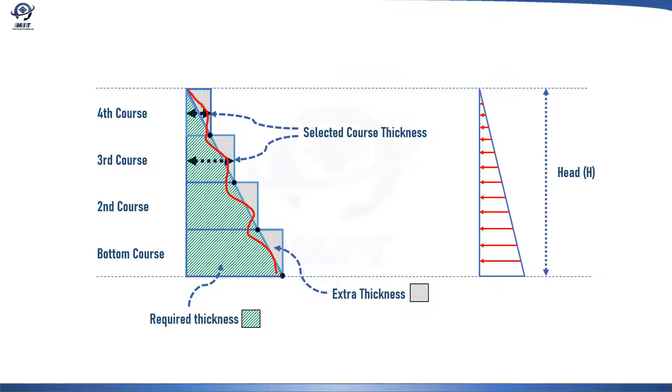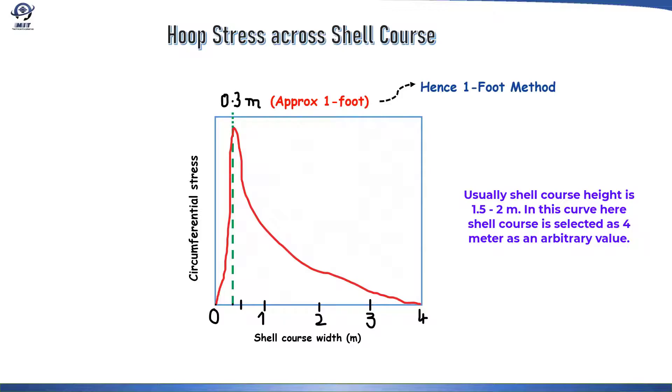Well, actual hoop stress profile is not exactly a diagonal line, but more like the red curve line shown here and as found experimentally, the maximum stress location at the bottom of each shell course is at a height of about one foot or 0.3 meter. Stress profile across the shell course may look like this. And as we can see, it peaks around 0.3 meter or approximately one foot. Hence, the method is given the name of one foot method.